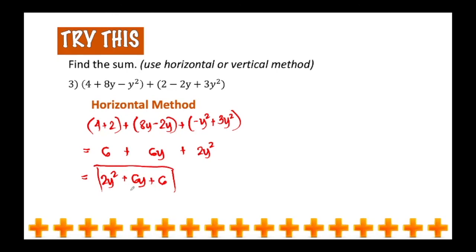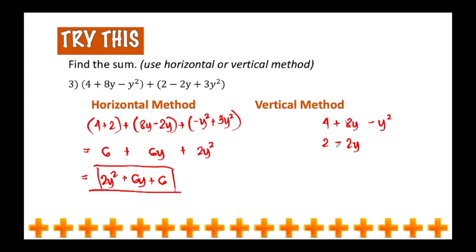Using the vertical method, you have to align like terms. Copy the first quantity: 4 plus 8y minus y squared. Align 2 with 4, align negative 2y with 8y, and align 3y squared with negative y squared. Then add from left to right: 4 plus 2 is 6, positive 8y plus negative 2y gives positive 6y, and negative y squared plus positive 3y squared gives positive 2y squared. You just have to arrange it in proper order, so the final answer is 2y squared plus 6y plus 6 — the same regardless of which method you use. And that is how you add polynomials.